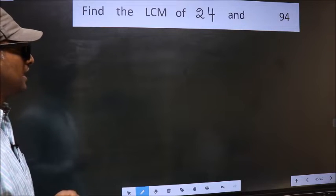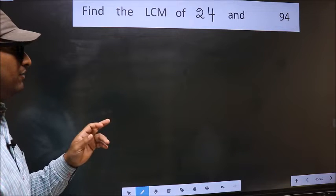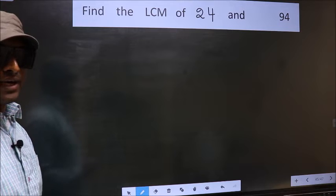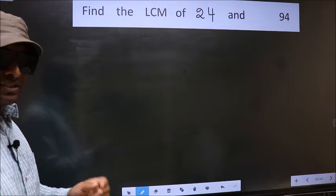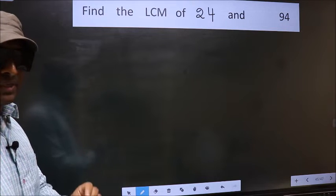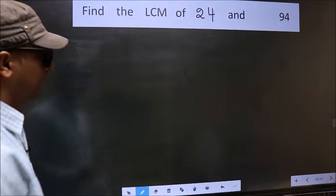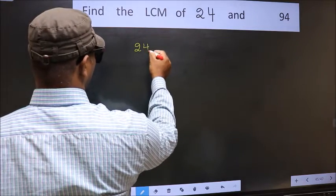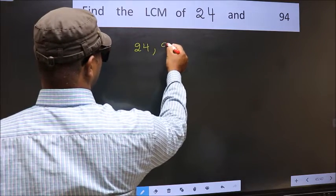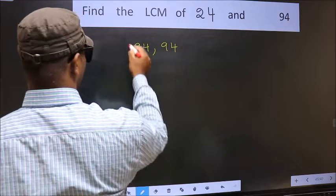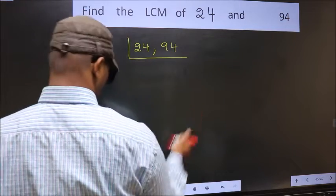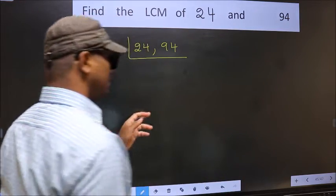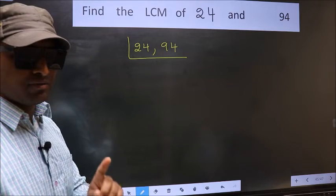Find the LCM of 24 and 94. To find the LCM, first we should frame it in this way: 24, 94. This is your step 1.